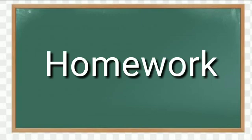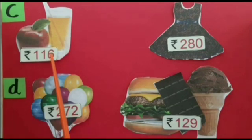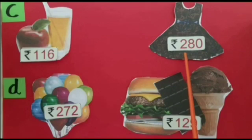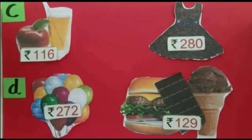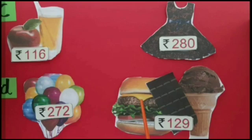Now it is time for homework. In part C, Manrik bought an apple and a juice whose cost is rupees 116 and a frog whose cost is rupees 280. By adding these two amounts, find how much she will pay to the shopkeeper. In part D, she bought some balloons for rupees 272 and some eatable things for rupees 129. By adding these two amounts, find how much she will pay for these two things.